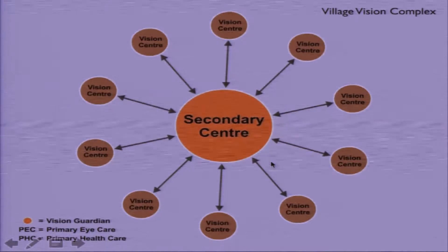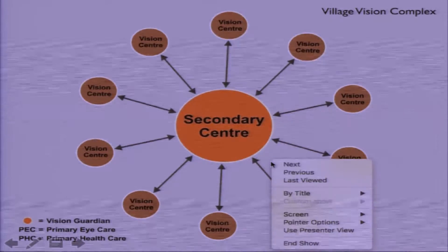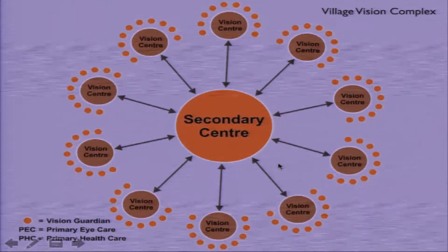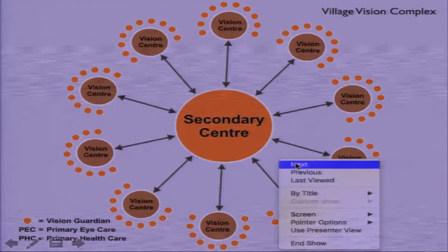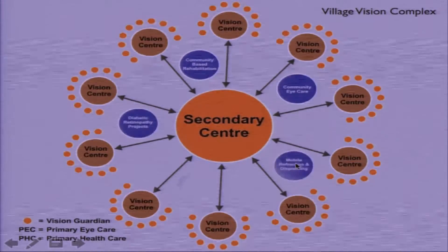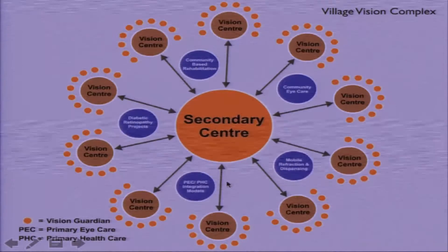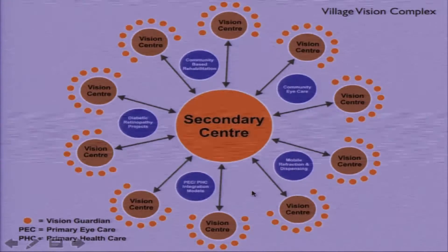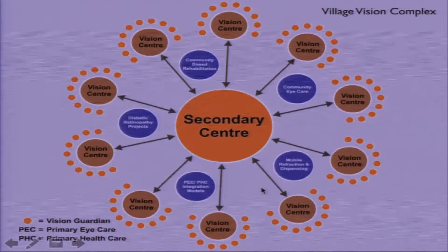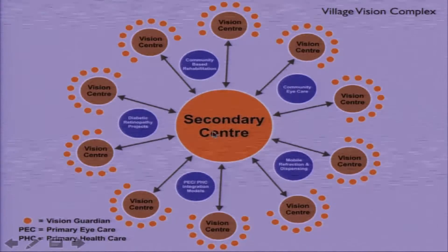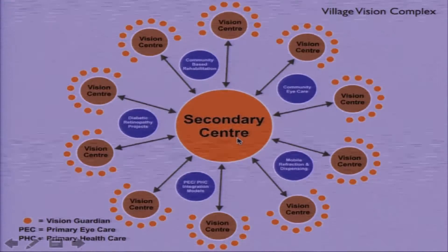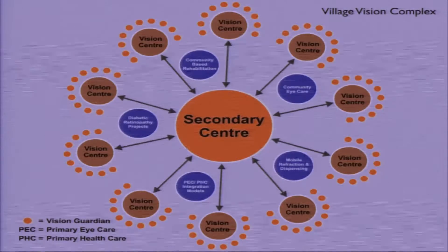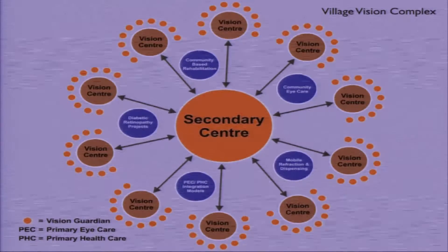Ten vision centers are scattered around one secondary center, and then we have vision guardians around them, along with different eye care projects revolving around the vision centers and secondary centers. This gives us a very comprehensive overview of what happens in a population of 500,000, which we can really show impact over a period of five to ten years.